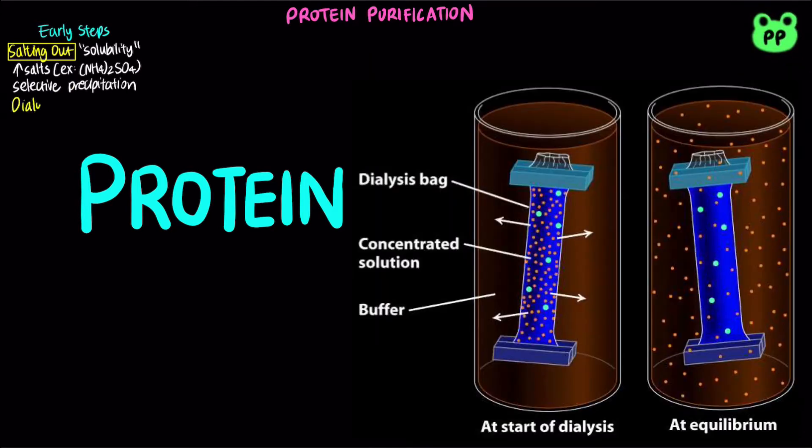Dialysis is a procedure that separates proteins based on size. The extract is placed in a bag or tube made of semi-permeable membrane, which retains large proteins within the bag or tube. Dialysis can also be used to remove ammonium sulfate from the salting out procedure.